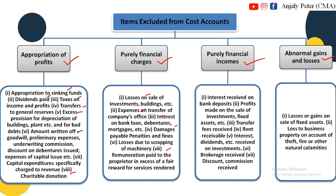Purely Financial Incomes are also excluded from cost accounts. For example: interest received on bank deposits, profit made on sale of investments or fixed assets, transfer fees received, rent received, interest and dividends received on investments, brokerage received, discounts and commission received — these are purely financial incomes.